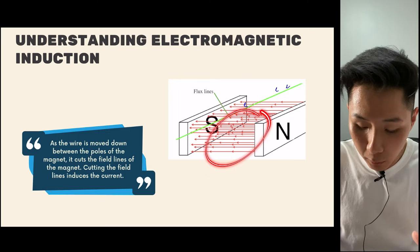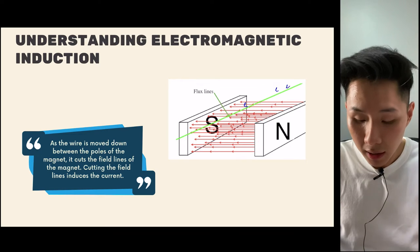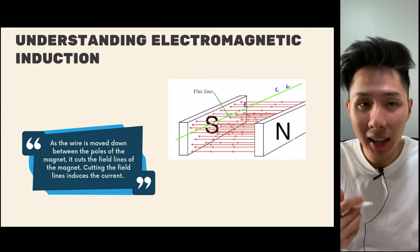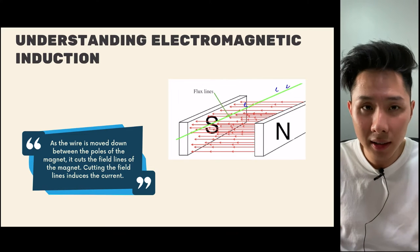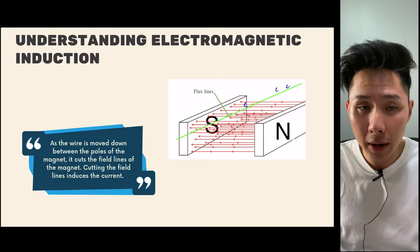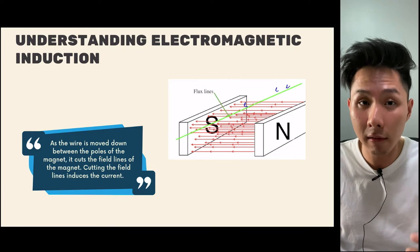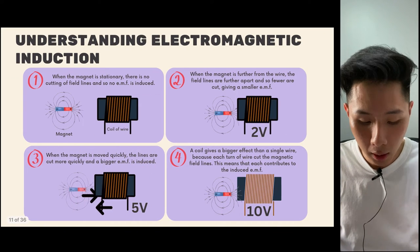Basically, the magnetic field line is cut by a conductor, and then electrons in the conductor are forced to move. When there is movement of electrons, there is a current flow.